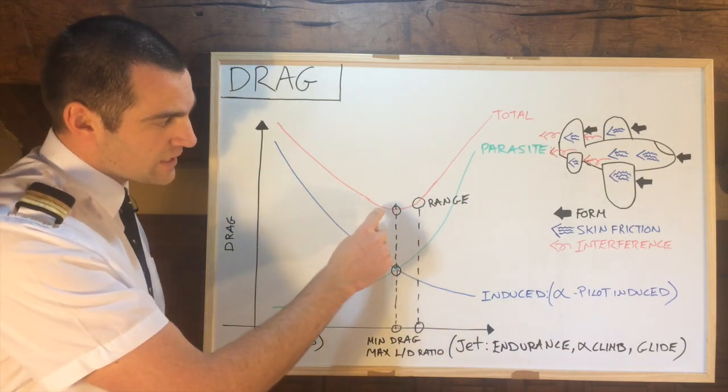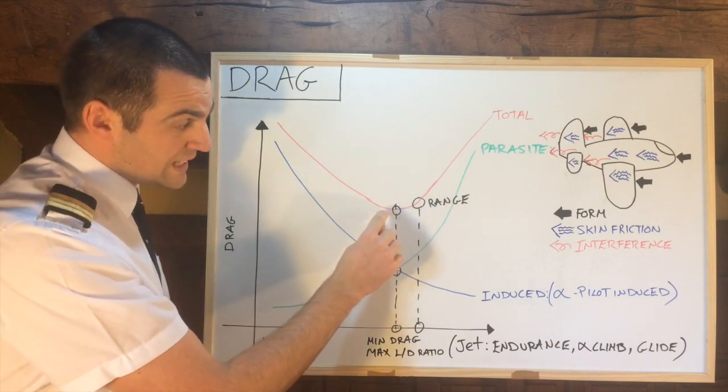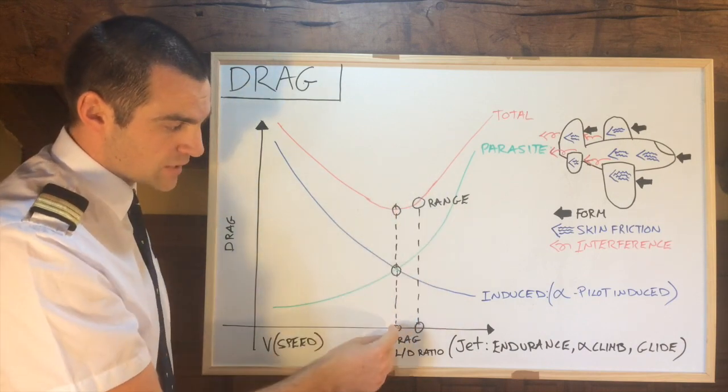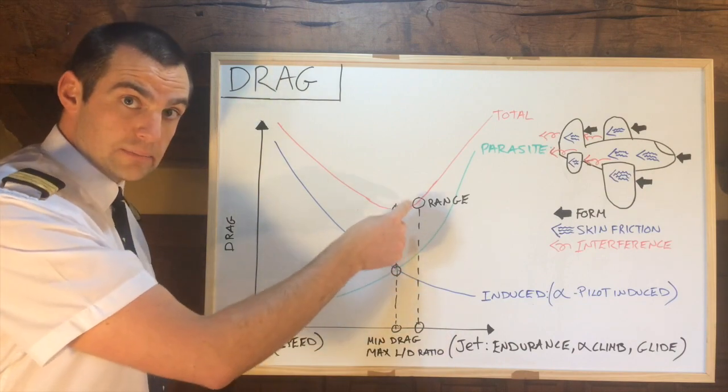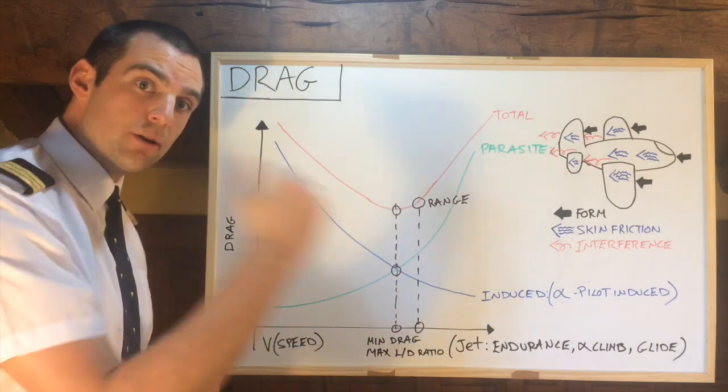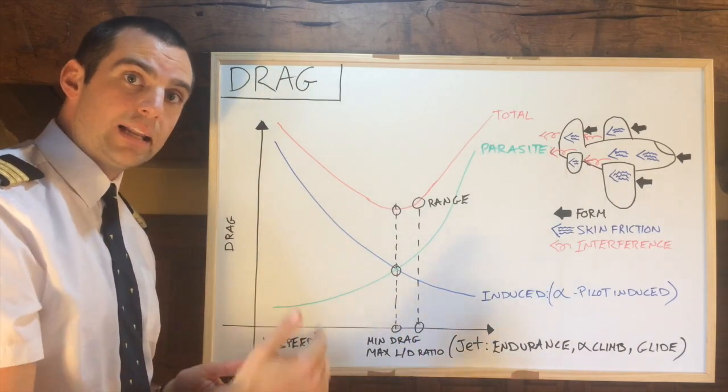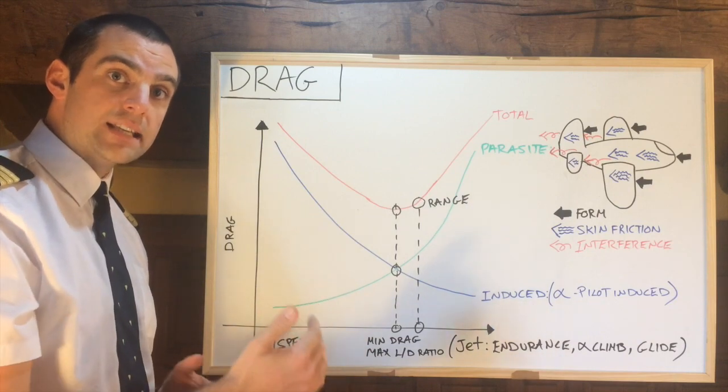So as you can see, the bottom of this total drag curve is relatively flat. So with a little increase in speed, as we can see down here, a little increase in speed, we have a very small drag penalty. So that is our best range speed, because it allows us to go a little bit faster even though we're burning a little bit more fuel, but we will get a further distance on that same amount of fuel.